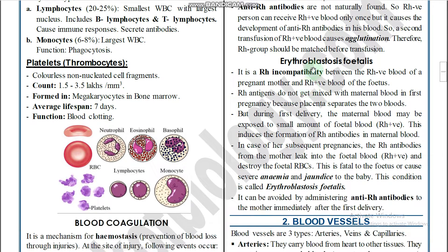Based on RH incompatibility, erythroblastosis fetalis can occur between an RH negative mother and an RH positive fetus. The father is RH positive (dominant), so the fetus is also RH positive. In the first pregnancy, the RH antigen does not mix with maternal blood because the placenta separates the two bloods. However, during first delivery, the mother's blood may be exposed to small amounts of fetal blood.